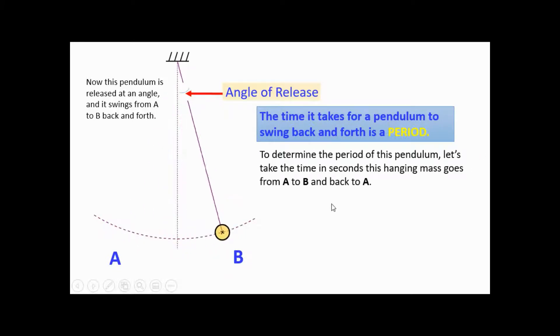To determine the period of this pendulum, which is an animation, let's take the time in seconds this hanging mass goes from A to B and back to A. To be precise, let's count this event 10 times using a stopwatch.